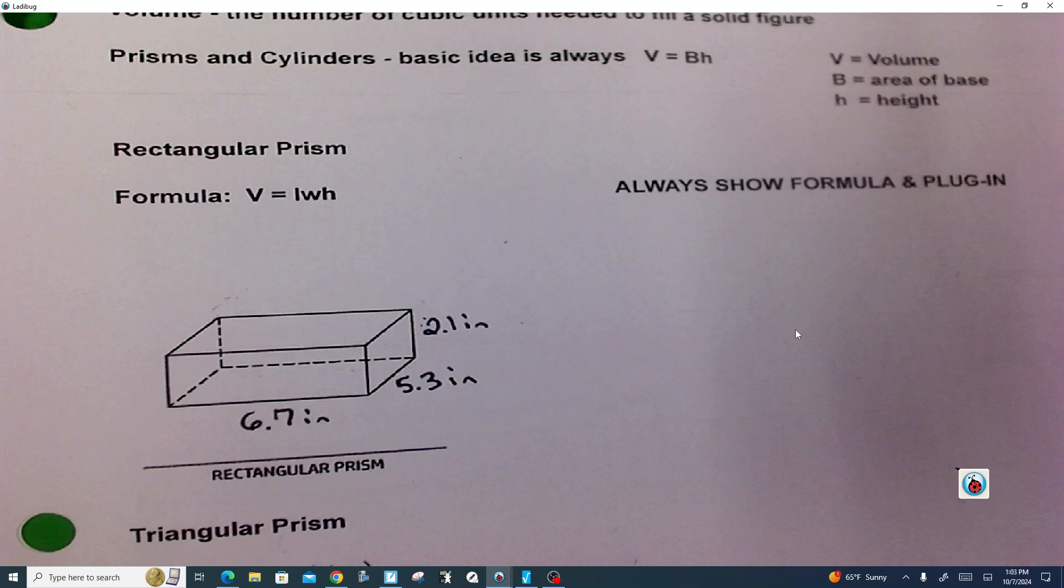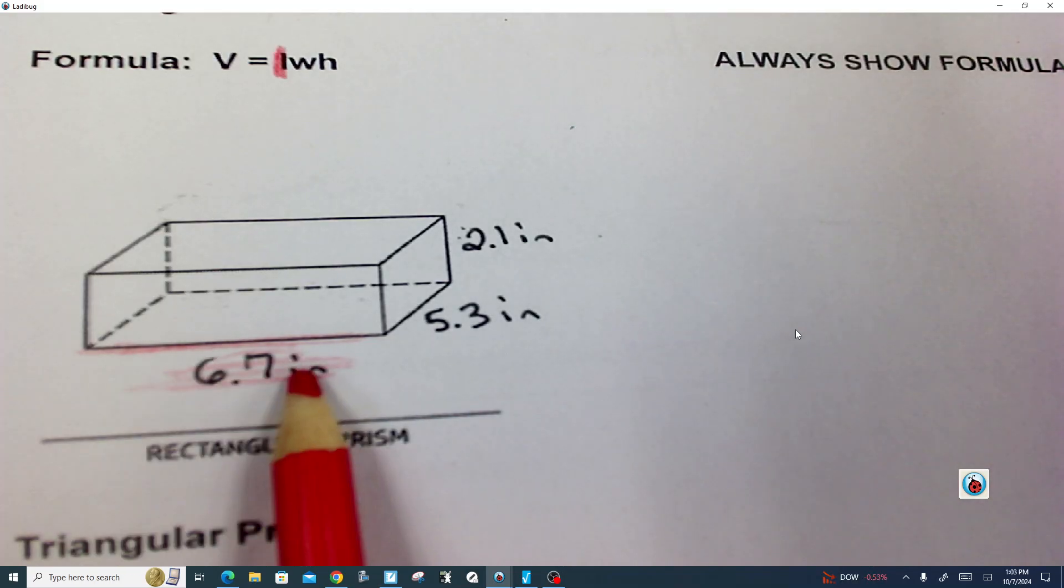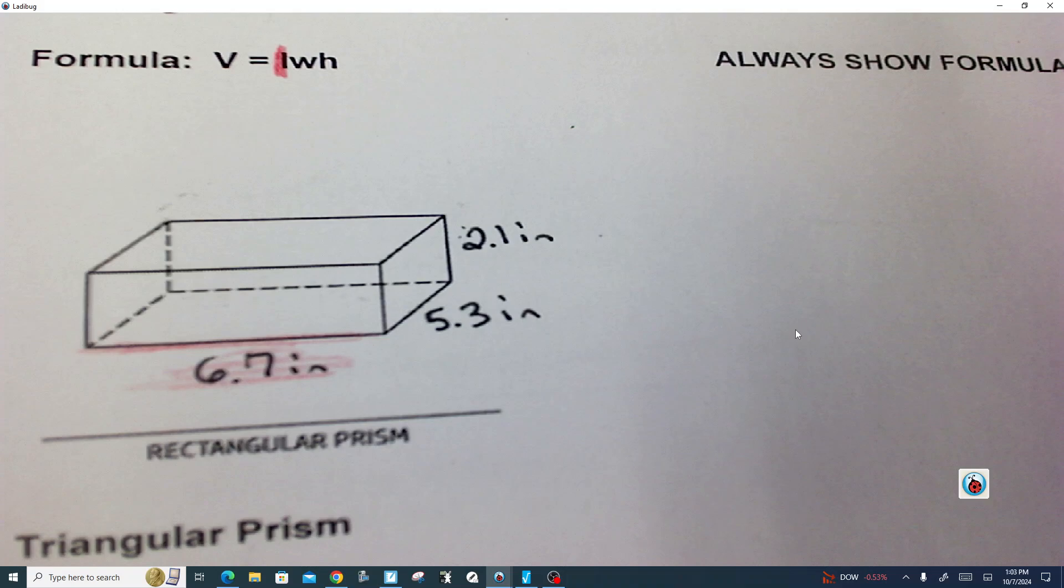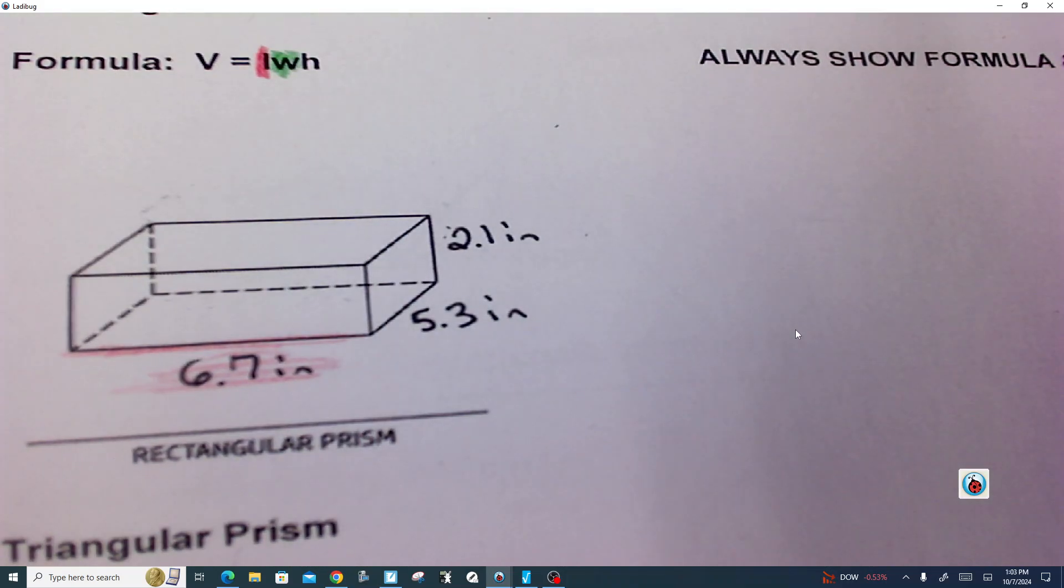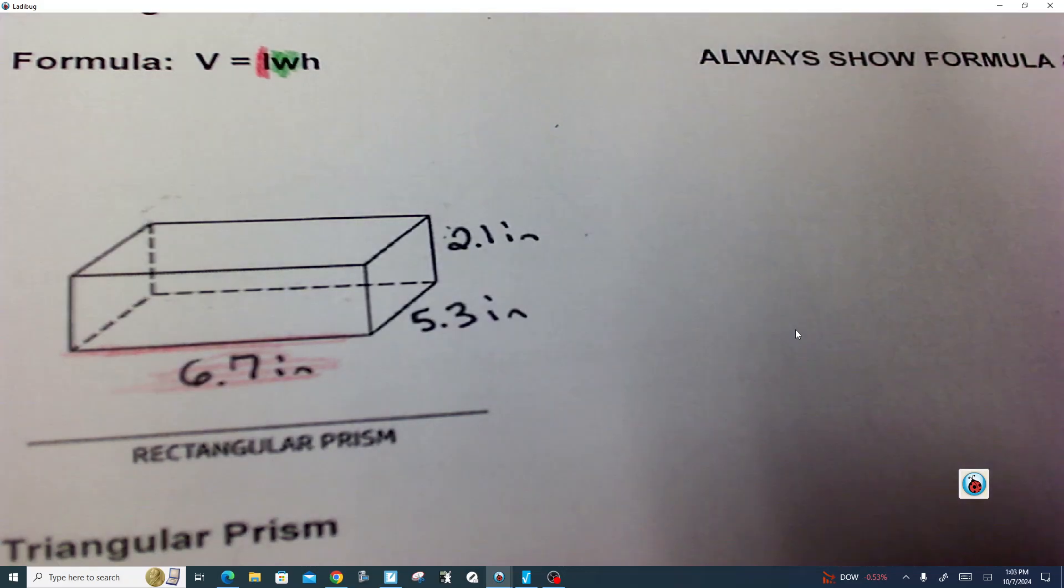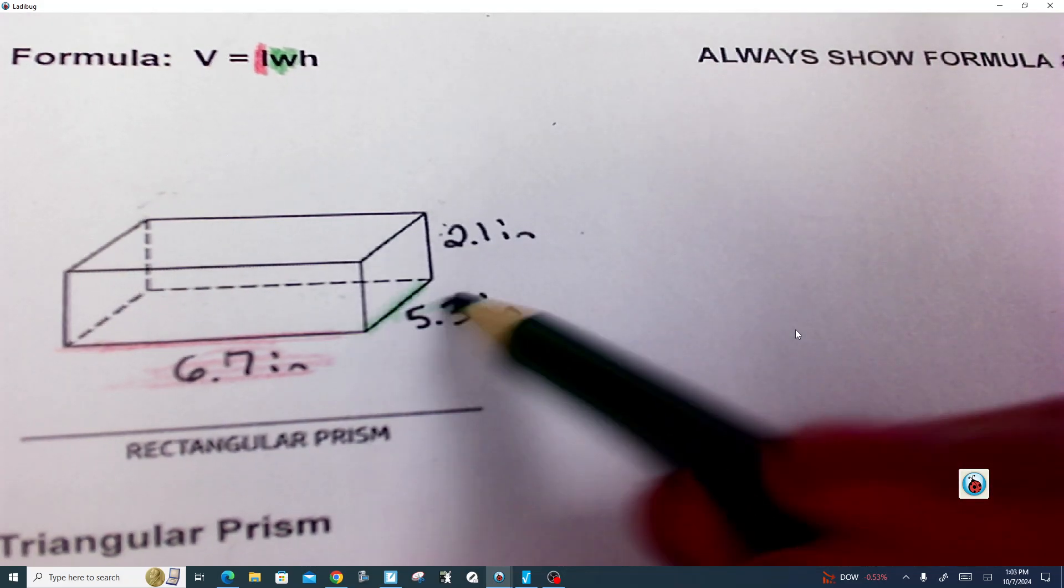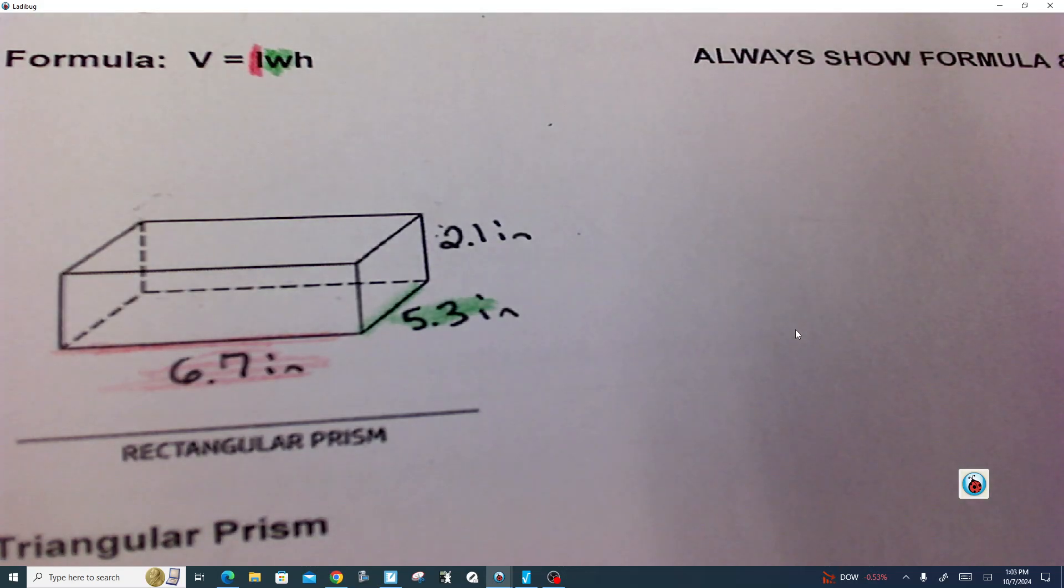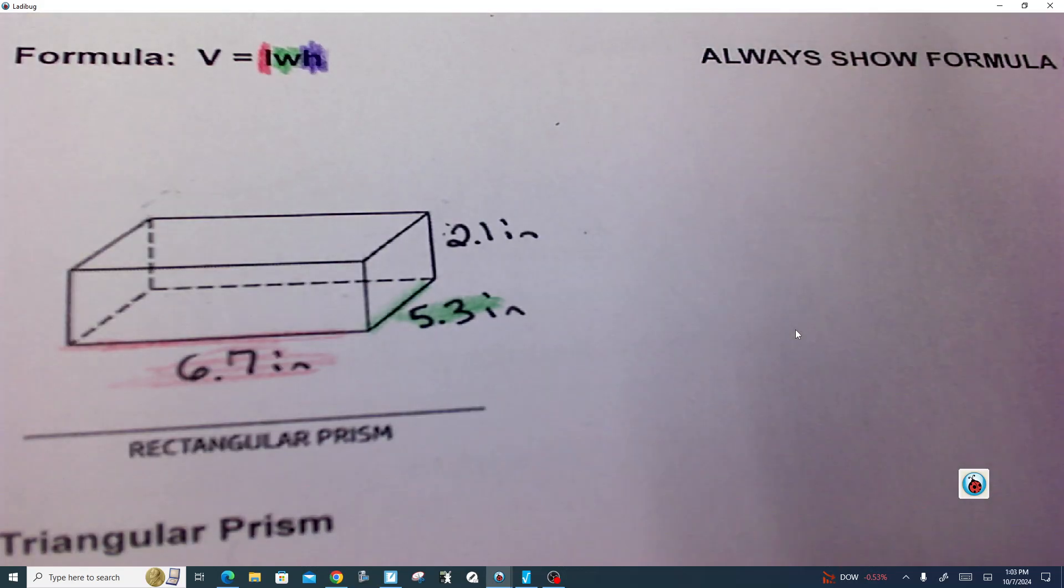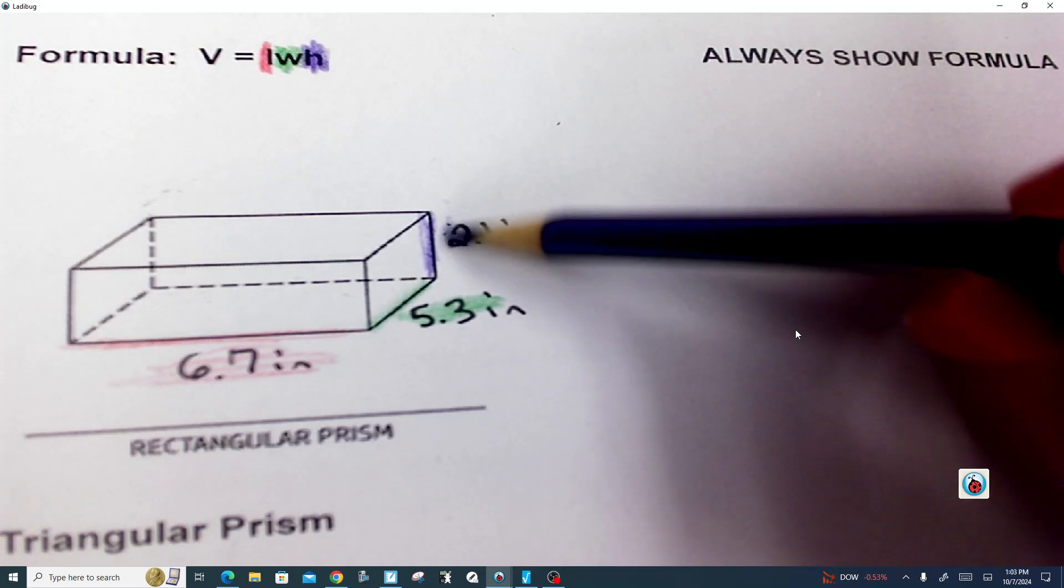So let's go and color code this. So 6.7 is your length. What would your width be? Yeah, so 5.3 would be the width, and then what would the height be? So you're correct. It would be the 2.1 for the height.